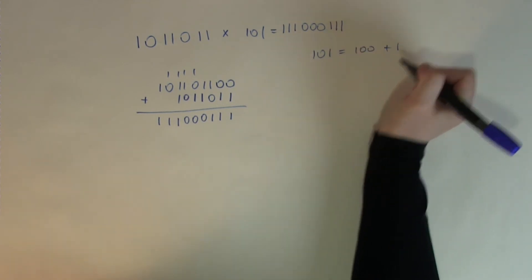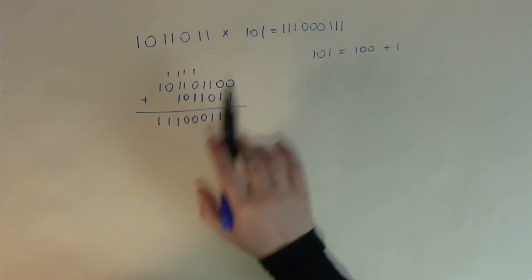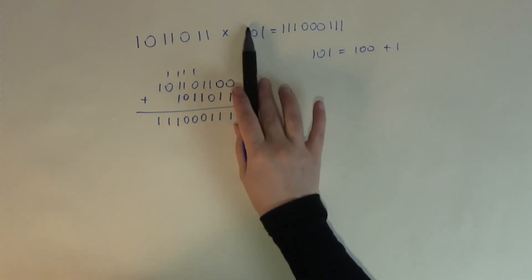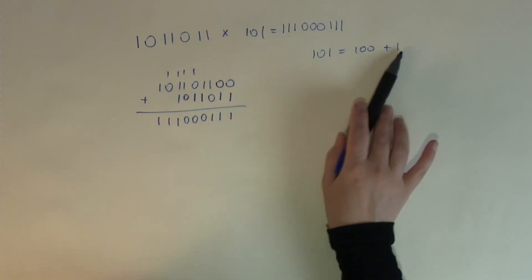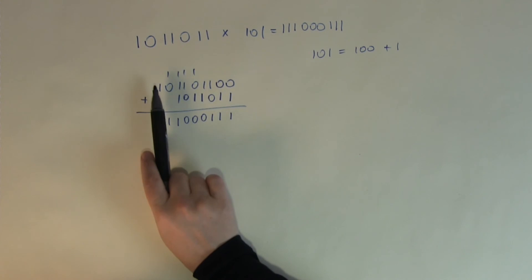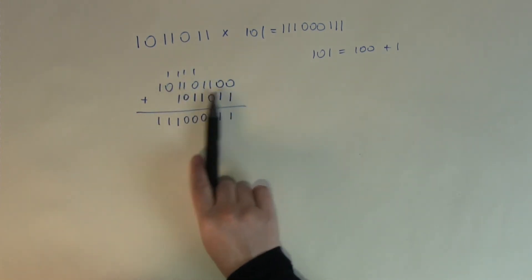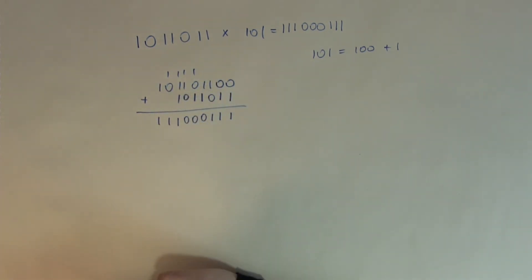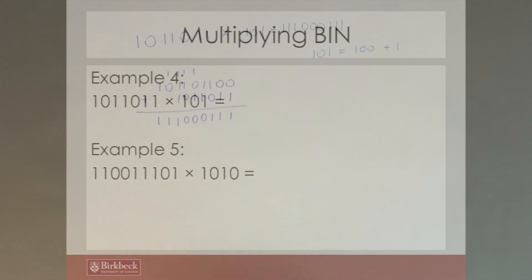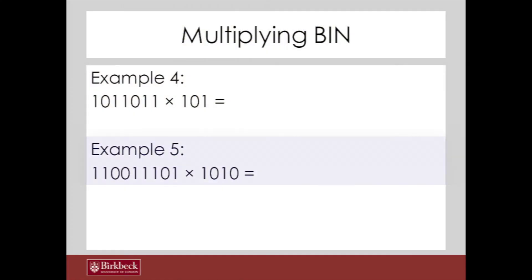Once you become familiar with the partitioning method and know how to multiply easily, just make sure you line them up properly. Now let's look at the last example: 1100111101 multiplied by 1010.